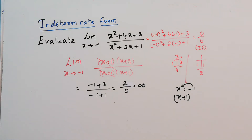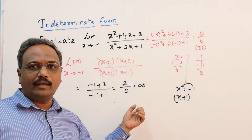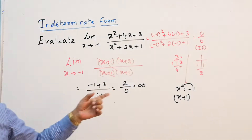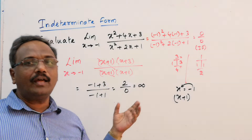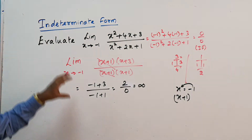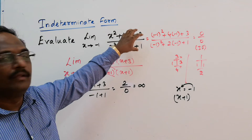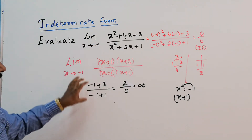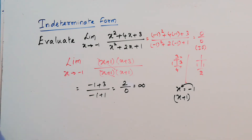Infinity is not an indeterminate form. The indeterminate forms are when we have 0 by 0, or infinity by infinity, or 0 to the power 0, or infinity to the power infinity — these are called indeterminate forms. Whenever we have a quadratic or polynomial expression giving an indeterminate form, we factorize and find the solution.